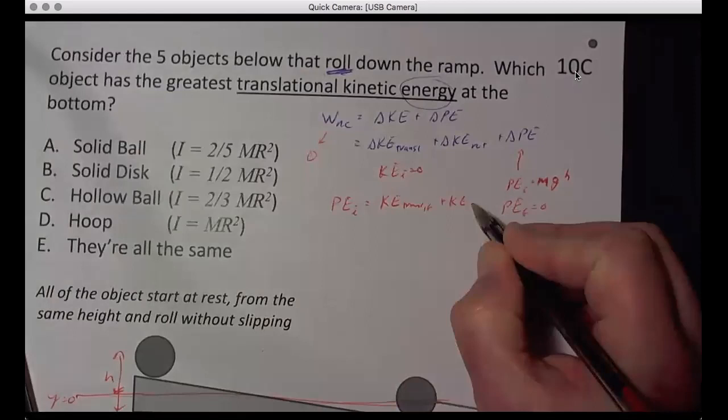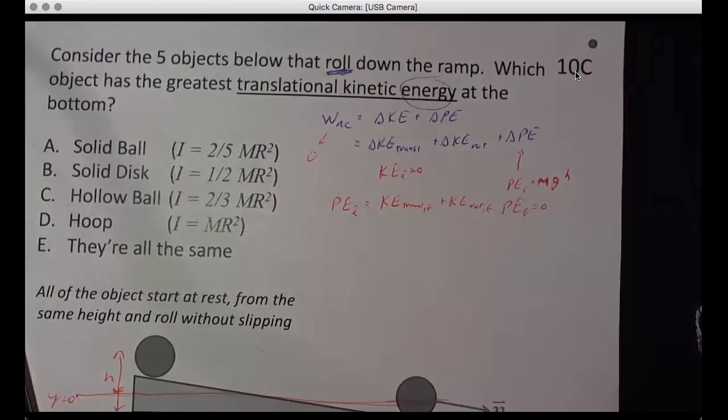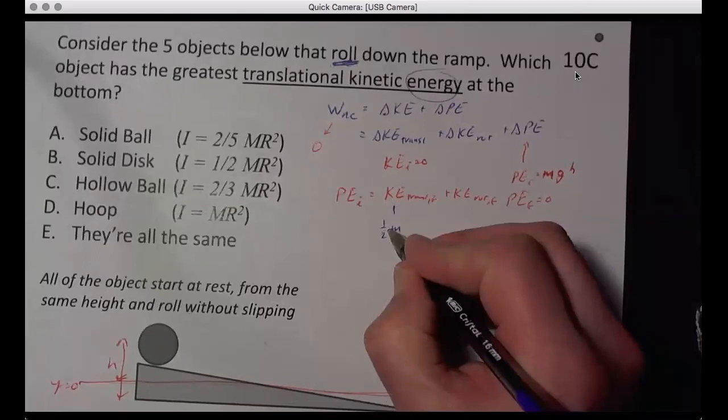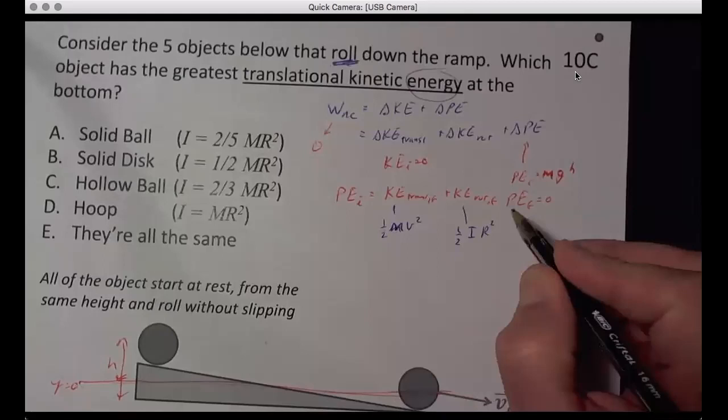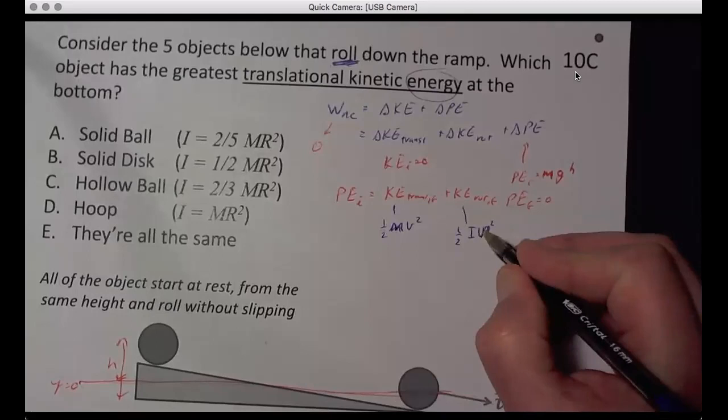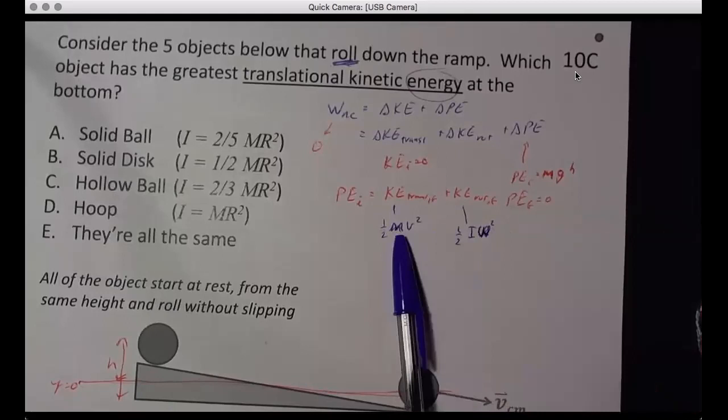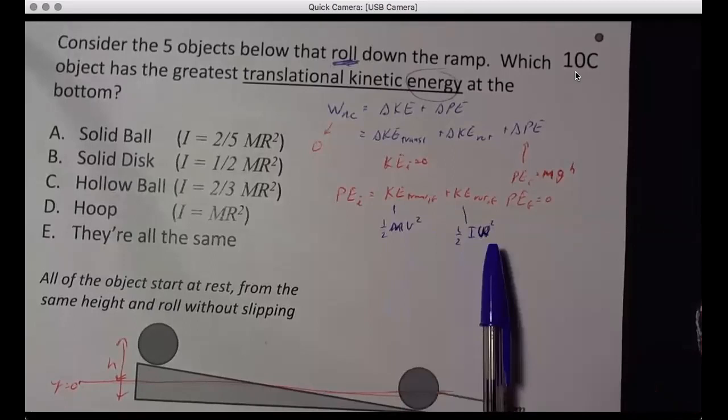Alright, so what is KE translation final? One half MV squared. And rotation final is one half I omega squared. This is units kilogram meter squared per second squared.